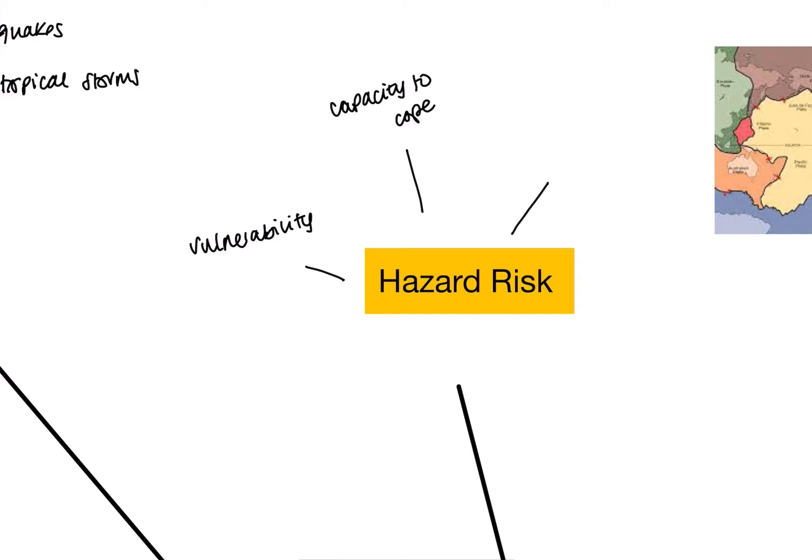The third thing that's going to influence hazard risk would be the nature of the hazard. Nature of the hazard could be influenced by a few things. That could be like the type of hazard - is it an earthquake, is it a volcanic eruption? The magnitude, so how big this hazard is, and also the frequency, so how often this hazard is occurring.